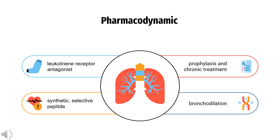Pharmacodynamics: Zafirlukast is a synthetic, selective peptide leukotriene receptor antagonist (LTRA), indicated for the prophylaxis and chronic treatment of asthma. Patients with asthma were found in one study to be 25 to 100 times more sensitive to the bronchoconstriction activity of inhaled LTD4 than non-asthmatic subjects. In vitro studies demonstrated that Zafirlukast antagonized the contractile activity of three leukotrienes — LTC4, LTD4, and LTE4 — in conducting airway smooth muscle from laboratory animals and humans. Zafirlukast also prevented intradermal LTD4-induced increases in cutaneous vascular permeability and inhibited inhaled LTD4-induced influx of eosinophils into animal lungs.